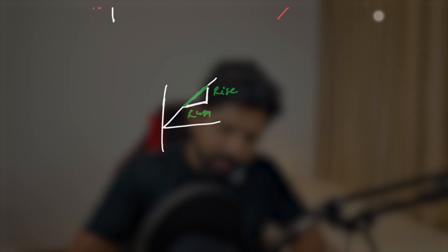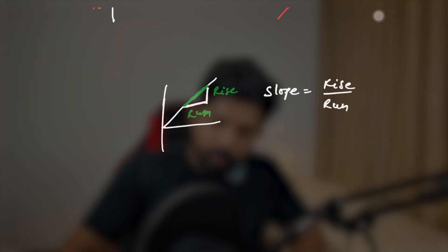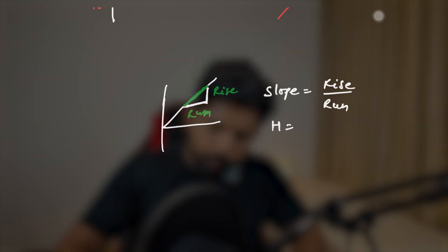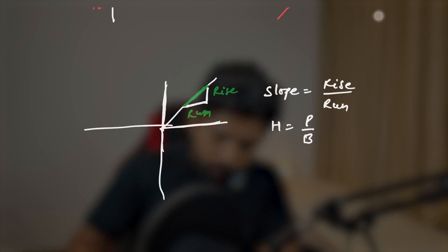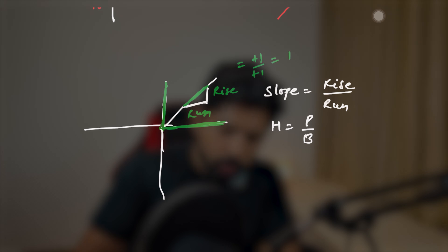Now let's talk about the slopes. So let's say we have a graph. The slope is this angle — we need to find it. To find this, we can say this is rise and this is run. The formula of slope is rise over run. Or we can say it is the hypotenuse — hypotenuse equals perpendicular upon base. In this particular example, the first quadrant is positive. The rise is also positive and the run is also positive. So if we take the unit price, rise over run will be plus one upon plus one — meaning the slope is positive one for the first quadrant.